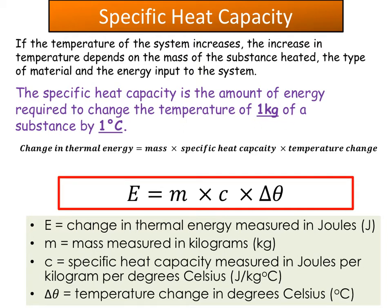The equation given in the exam is: change in thermal energy equals mass times specific heat capacity times temperature change. That's E = mcΔθ. Energy (E) is measured in joules; mass (m) in kilograms; specific heat capacity (c) in joules per kilogram per degree Celsius, J/(kg·°C); and temperature change (Δθ) in degrees Celsius.